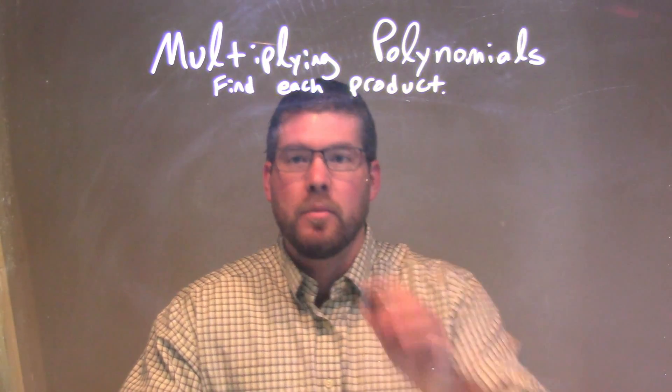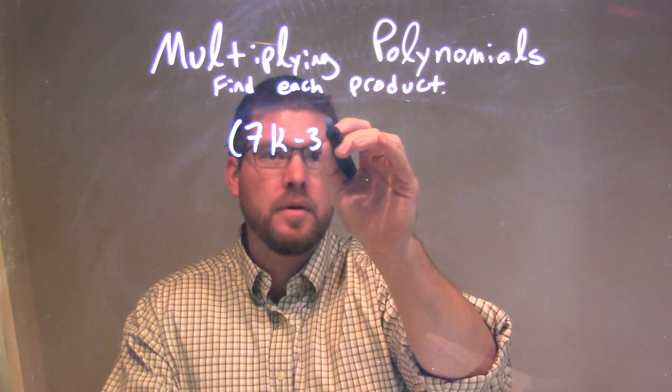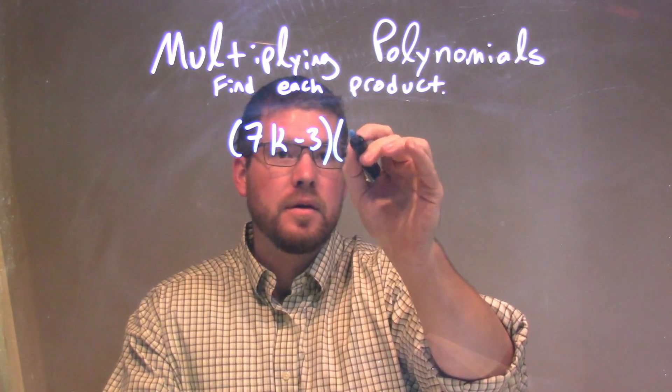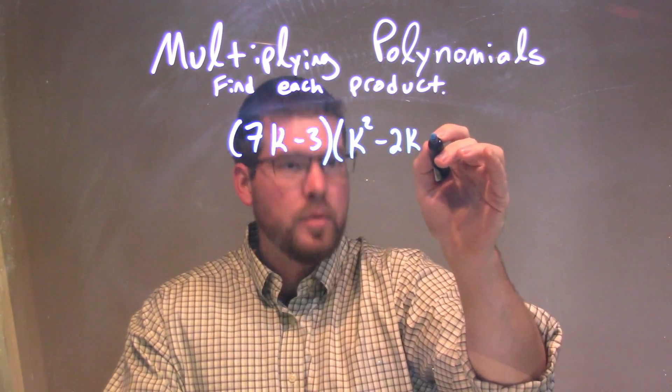So I was given this problem here: 7k minus 3 times k squared minus 2k plus 7.